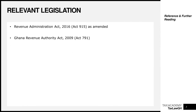Before we start, it's good to establish our relevant legislation. The two main principal laws for tax administration in Ghana are the Revenue Administration Act of 2016, Act 915 as amended, and the Ghana Revenue Authority Act of 2009, Act 791 — the law that established the Ghana Revenue Authority. There are also other sources of guidance such as practice notes and notices by the GRA and its several divisions.